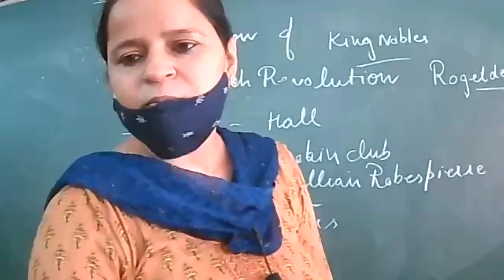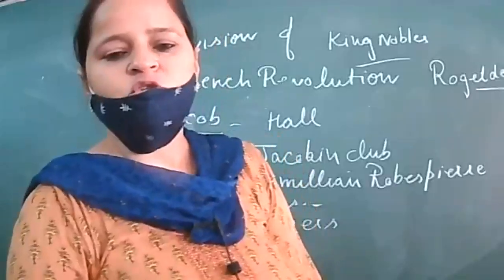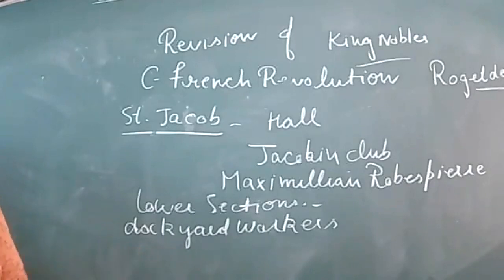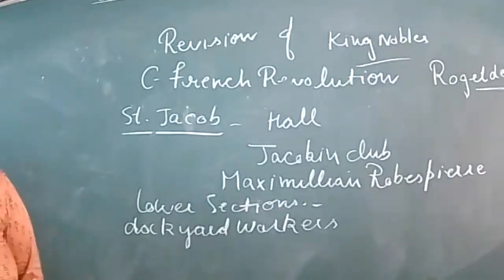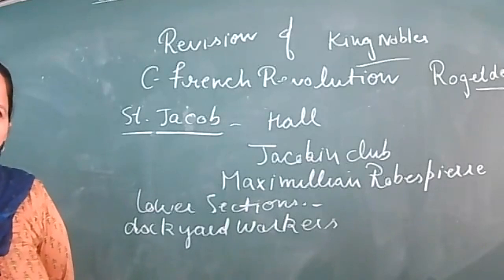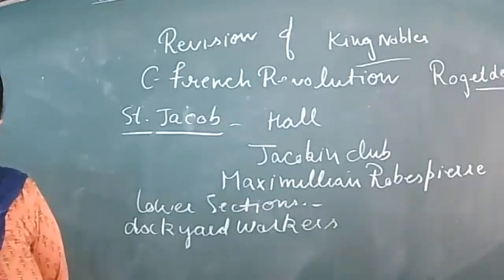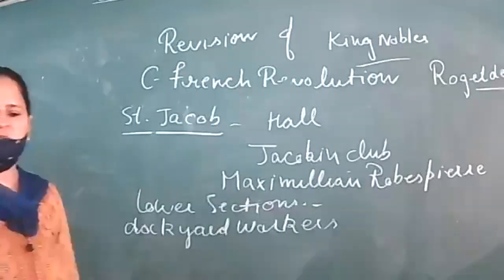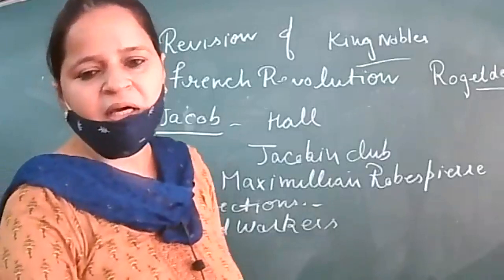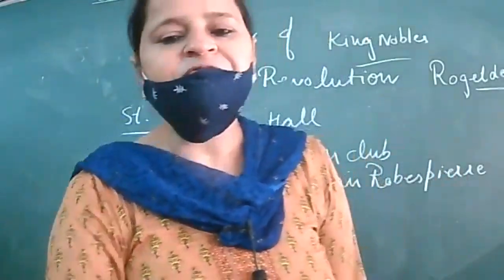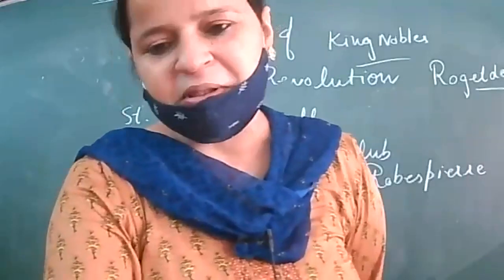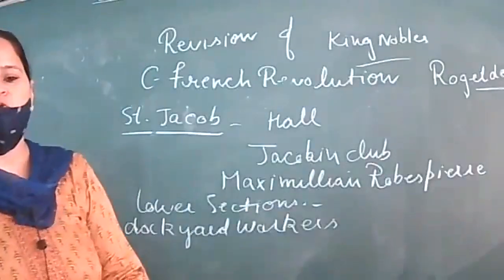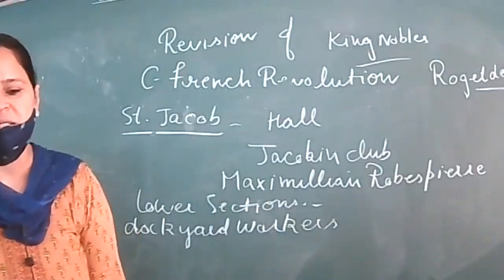Why did they join this club? Because they wanted equal rights compared to the rich sections of society. The feudal system was already finished, but there was still discrimination in society. They met under Maximilien Robespierre, and the Jacobin Club became very popular.